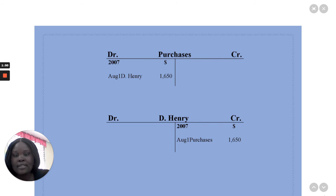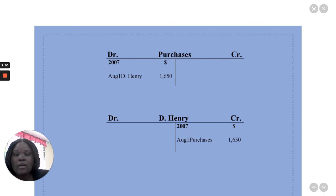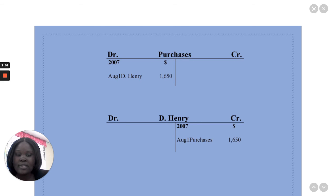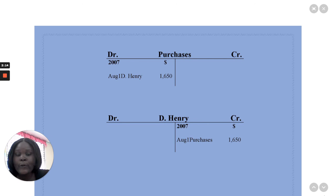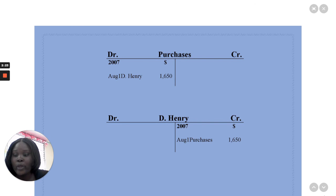Purchases is an asset, and the double entry rule states that whenever assets increase, we must debit it. So we must include the date of the transaction, the details, as well as the dollar amount. Because this is a liability for D. Henry and it is increasing, according to the double entry rules, we need to credit D. Henry. We must include the date as well as the details. Don't forget these rules when you are working with your T-accounts. I hope you enjoyed this video.